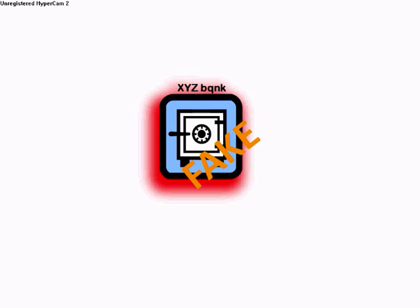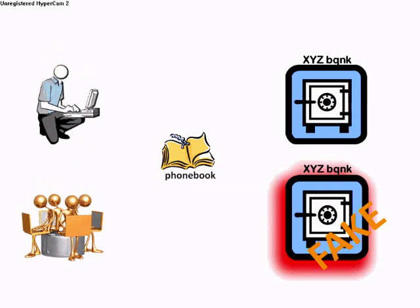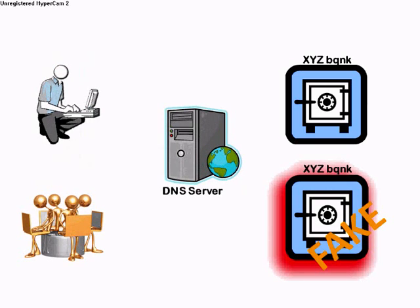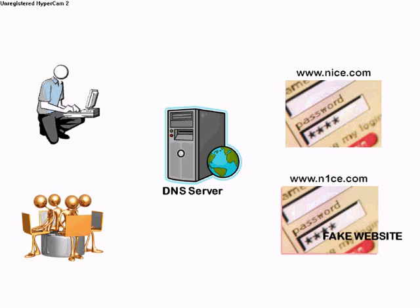Now let's look at this scenario in technical terms. First of all, let's replace the phone book with a Domain Name System, or DNS server, and the bank's address with an Internet Protocol, or IP address. The bank would actually be a legitimate website — in this case, www.nice.com. A DNS server is a place where you store all the IP addresses of various websites.